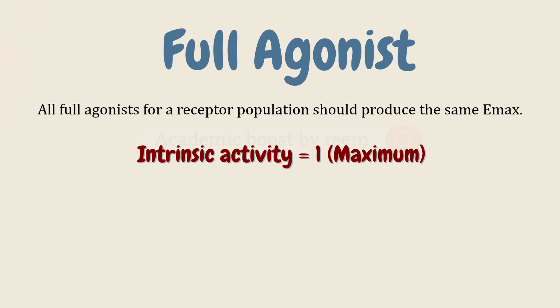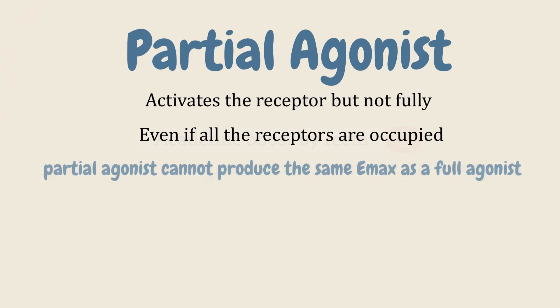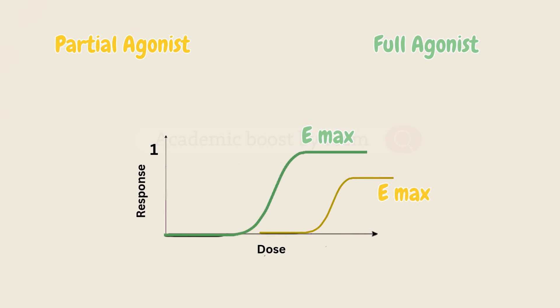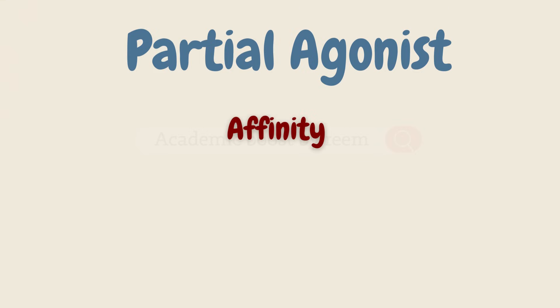Partial agonists do activate the receptor, but not fully like a full agonist. So even if all the receptors are occupied, a partial agonist cannot produce the same Emax as a full agonist. A partial agonist's Emax will always be lower than a full agonist's Emax, and its intrinsic activity is between zero and one.